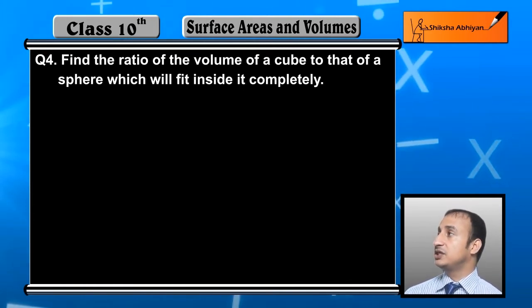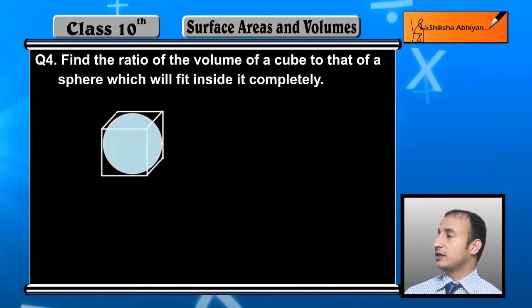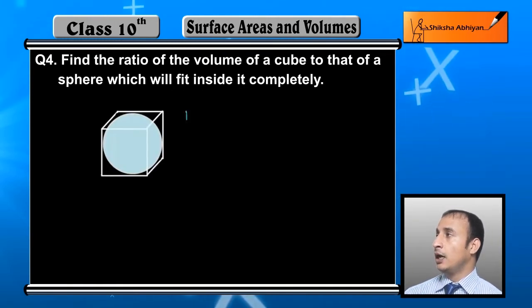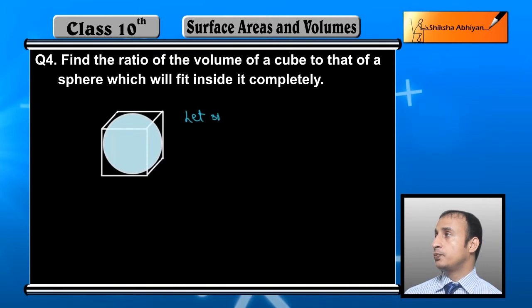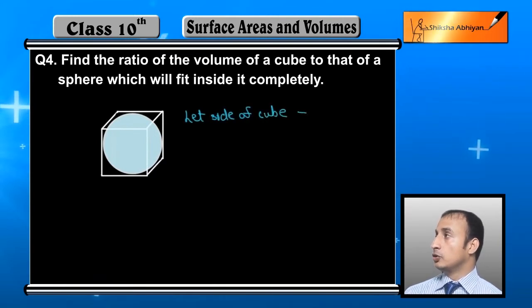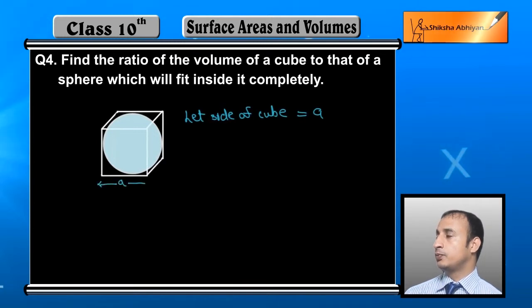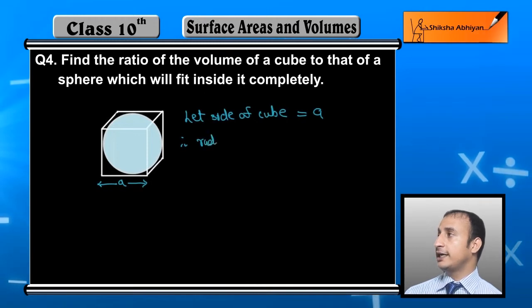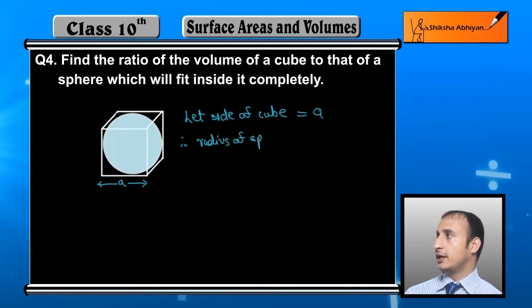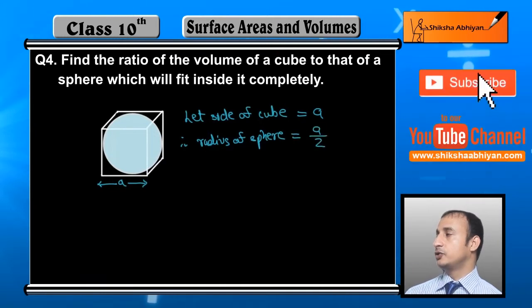As shown in the figure, the sphere sits completely inside the cube. The radius of the sphere will be half of the side of the cube, because the side of the cube acts as the diameter of the sphere. So let the side of the cube be 'a'. Then the radius of the sphere is a/2.